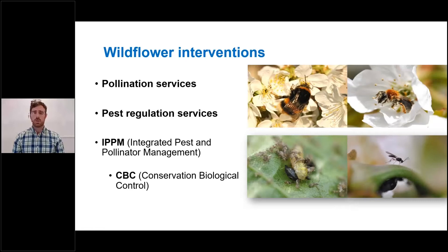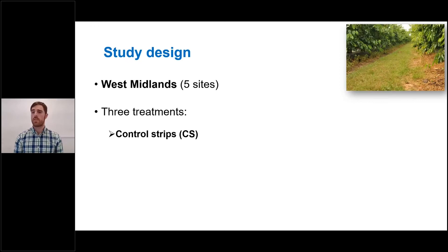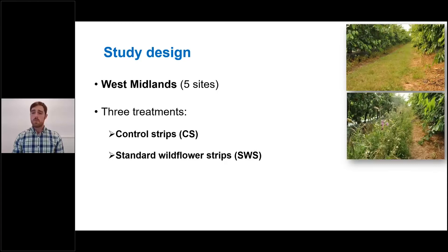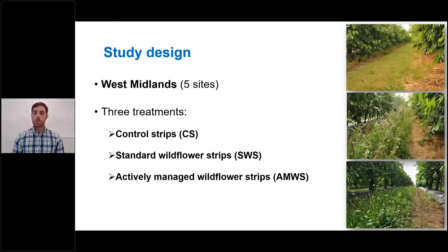Particularly focusing on conservation biological control — which aims to enhance these beneficial insects with no human intervention other than wildflower establishment — my PhD was conducted in the West Midlands at five different sites, comparing three treatments. The first was control strips with the original alleyway vegetation dominated by grass species, cut regularly to 10 centimetres high. The second was establishment of wildflower strips — a mix of nine native perennial wildflower species replacing the original vegetation with a single cut in late September. The third treatment was the same wildflower mix but kept to a height of 20 centimetres during the growing season.